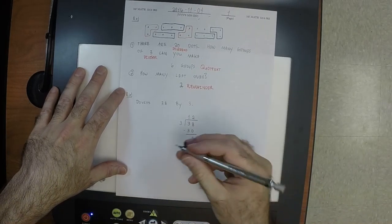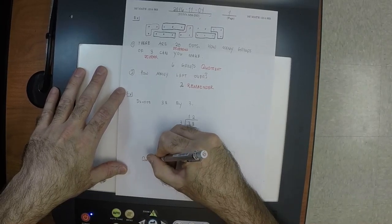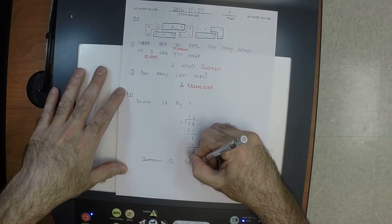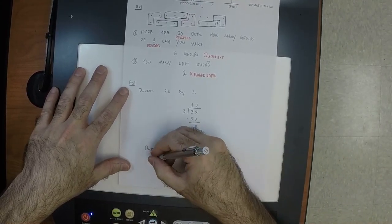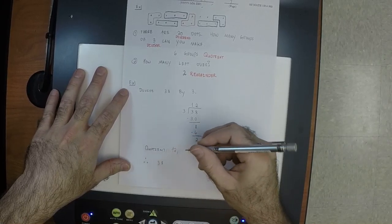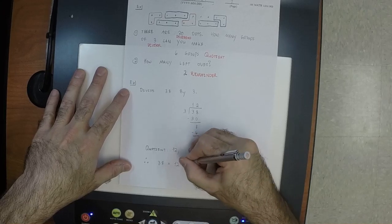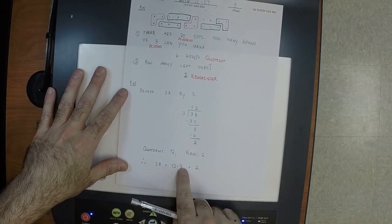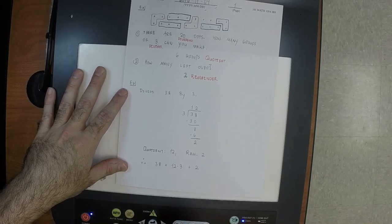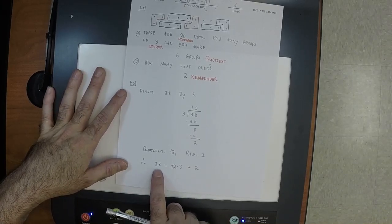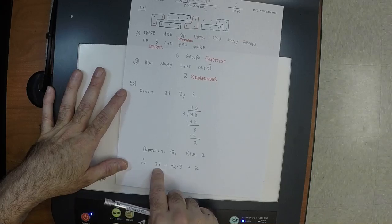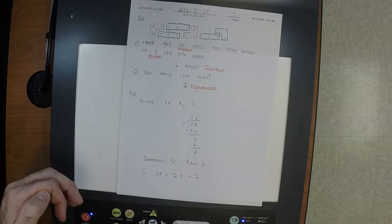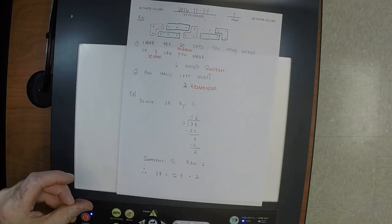Now 2 is inside the house and 3 wants to come in. How many times can 3 come in? It cannot. So the quotient is 12 and the remainder is 2. As a result of this computation, you have confirmed that 38 equals 12 multiplied by 3 plus 2 — the dividend equals the quotient times the divisor plus the remainder. If you had 38 M&Ms and broke them into groups of 3, you'd make 12 groups with 2 left over.